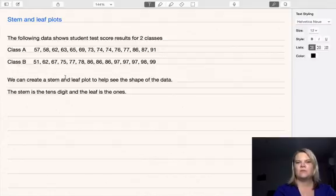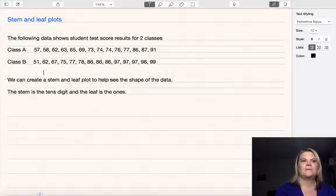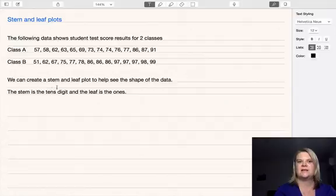One of the reasons we might want to look at this data to help analyze it, we might want to look at the shape of the distributions, and a stem and leaf plot can help us to see the shape really easily. The stem part of the stem and leaf plot is the tens digit and the leaf part is the ones digit.